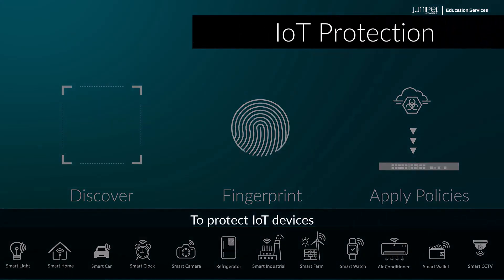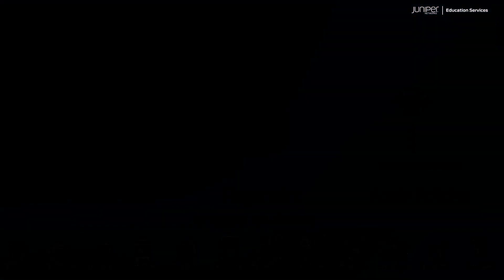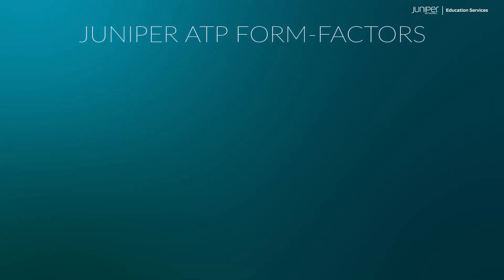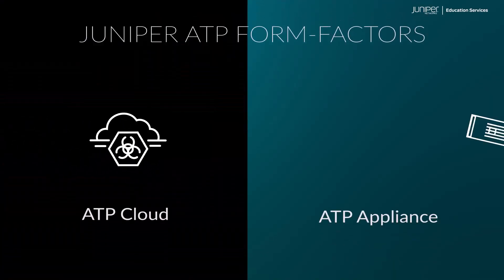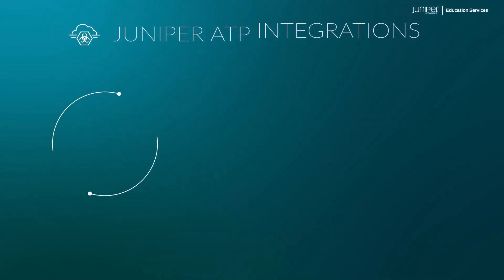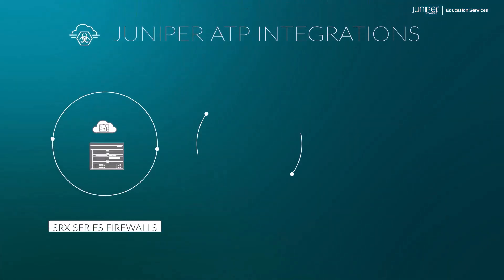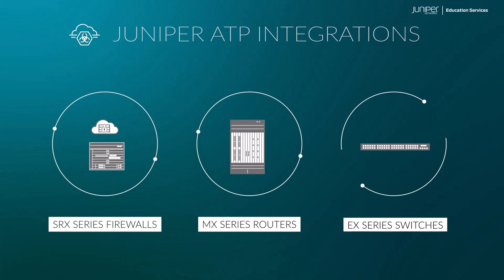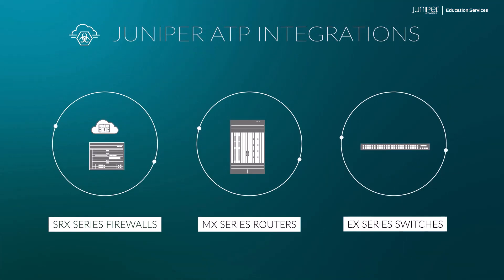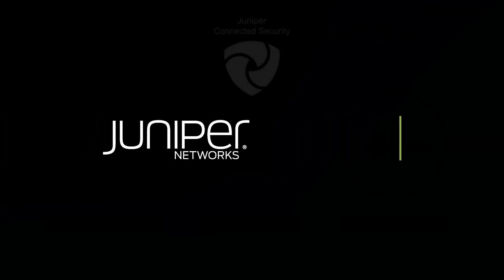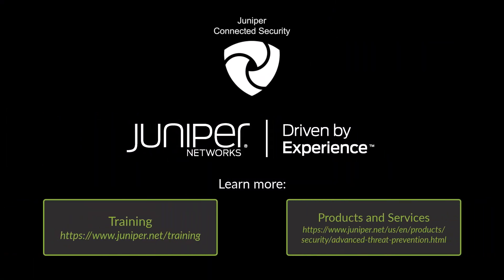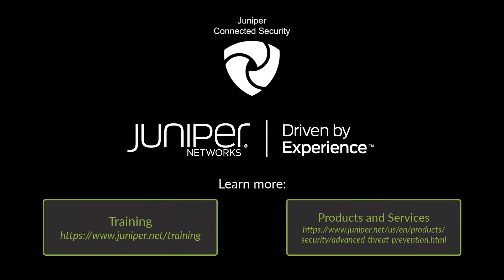Discover, fingerprint, and apply security policies to protect Internet of Things (IoT) devices. Juniper Advanced Threat Prevention is available as a cloud-based service or an on-premises appliance and integrates with Juniper's SRX series firewalls, MX series routers, and EX series and QFX series switches. For more information, follow the links provided below.